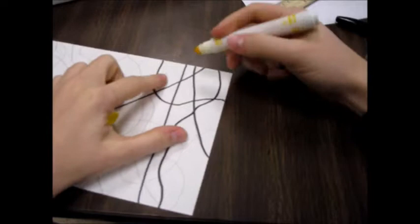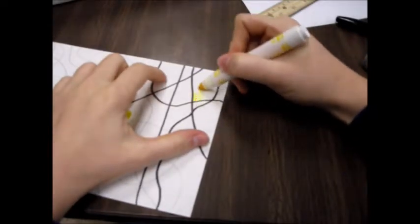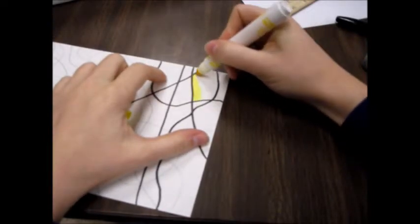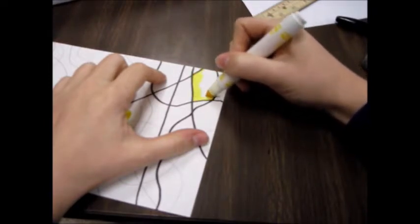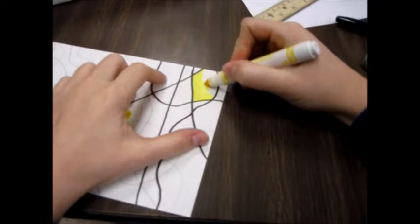So you could take a marker, decide what section you're going to color, and color it in. This is a focusing project so that you do not leave any white spaces. Not even a little.